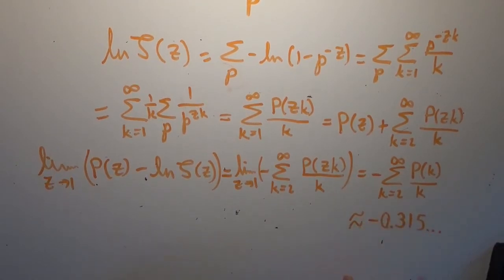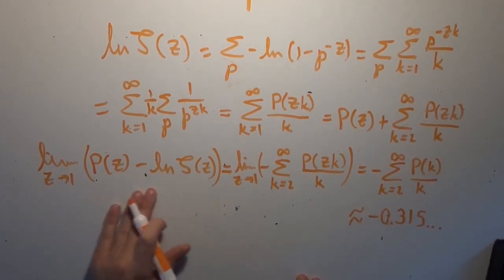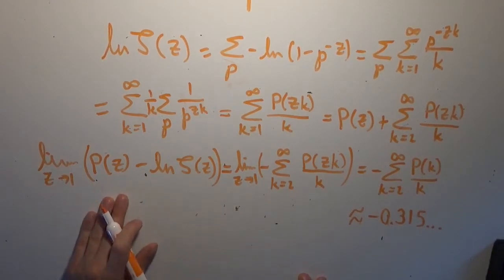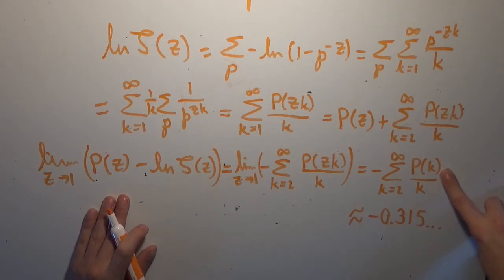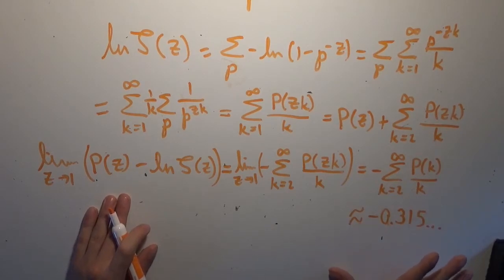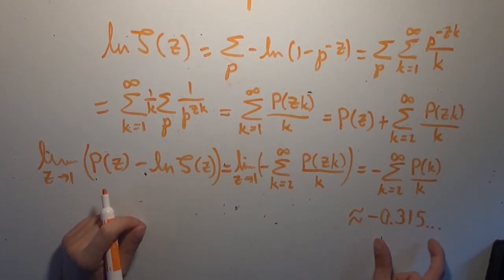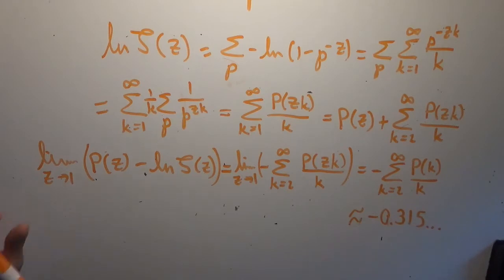Remember that value, about −0.315. It's the sum over all valid positive integer inputs to the prime zeta function, divided by those integers, made negative. It looks very irrational, though I won't claim to know that for certain. This is almost the constant we're after — but I want to look at this limiting difference again in a different light.